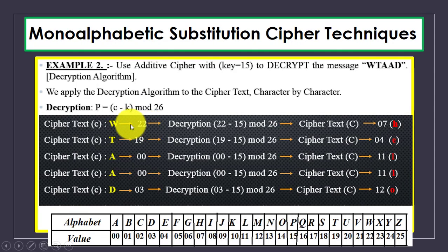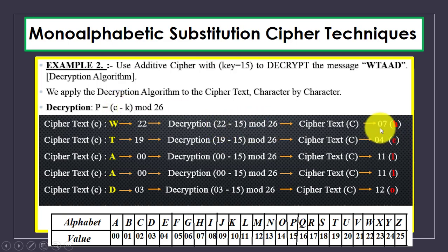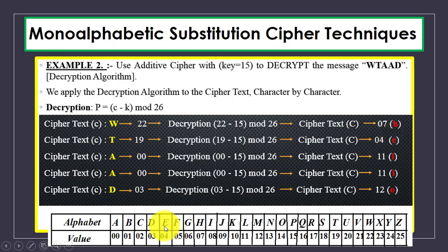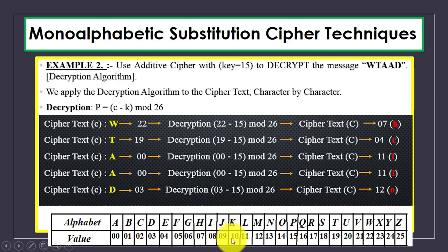For W, value is 22: (22 - 15) mod 26 = 7, and at 7 we have H. For T, value is 19: (19 - 15) mod 26 = 4, and at 4 we have E. For A, value is 0: (0 - 15) mod 26 = 11, and at 11 we have L. Like that we decrypt all characters to recover the original plaintext.